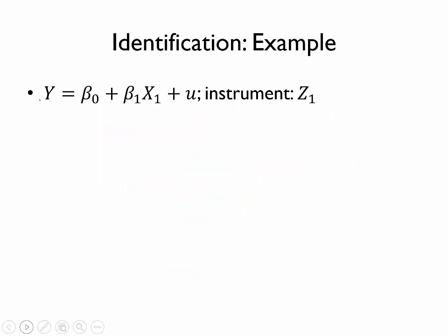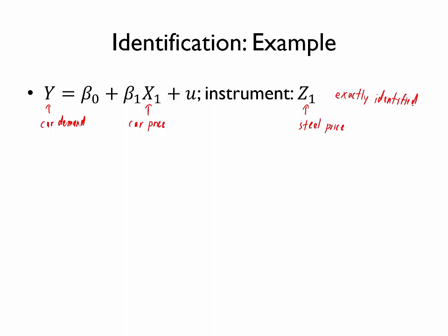Let's repeat an example we have looked at before, where the dependent variable is demand for cars, the independent variable is the price of a car, and since the price of a car is potentially endogenous, we have an instrument for it which is the price of steel. In this model we have one exogenous instrument and one endogenous independent variable — those two numbers are the same, so this model is exactly identified. Because it's exactly identified, we should have no issue estimating it using two-stage least squares.